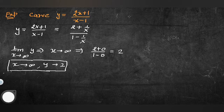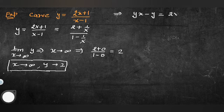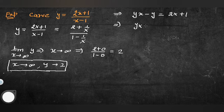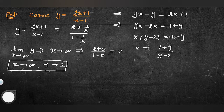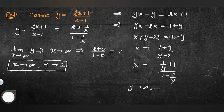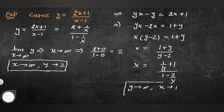دوسرا asymptote ڈھونڈنے کے لیے equation کو x کی form میں convert کرتے ہیں: x = (1 + y)/(y − 2)۔ پھر y common لے کر limit as y→∞ لیتے ہیں تو x → 1 آتا ہے۔ تو x = 1 ہمارا vertical asymptote ہے۔ اس طرح y = 2 اور x = 1 دونوں asymptote مل گئے۔